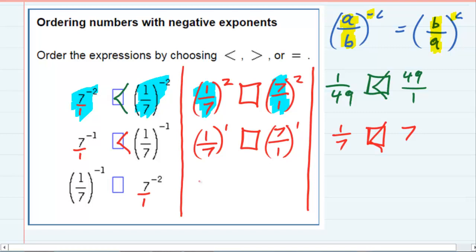And then the last one, 7 over 1 raised to the positive 1 power, and 1 over 7 raised to the positive 2 power. Evaluating the one on the left is 7 over 1 to the first, that's just 7.